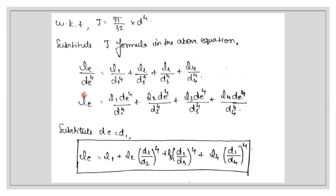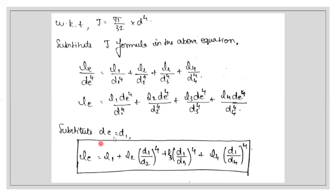De to the power 4 is the diameter of the equivalent shaft. After cancelling π/32, we cross-multiply the diameter of the equivalent shaft to the other side. So Le equals L1 times de⁴/d1⁴, plus L2 times de⁴/d2⁴, plus L3 times de⁴/d3⁴, plus L4 times de⁴/d4⁴.